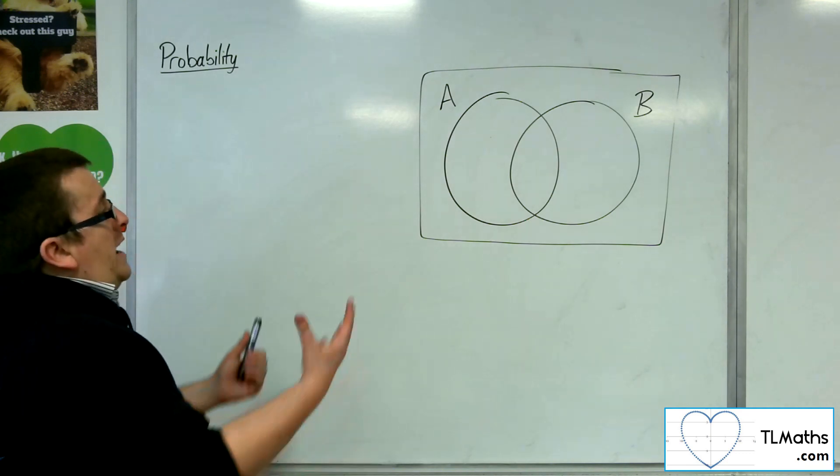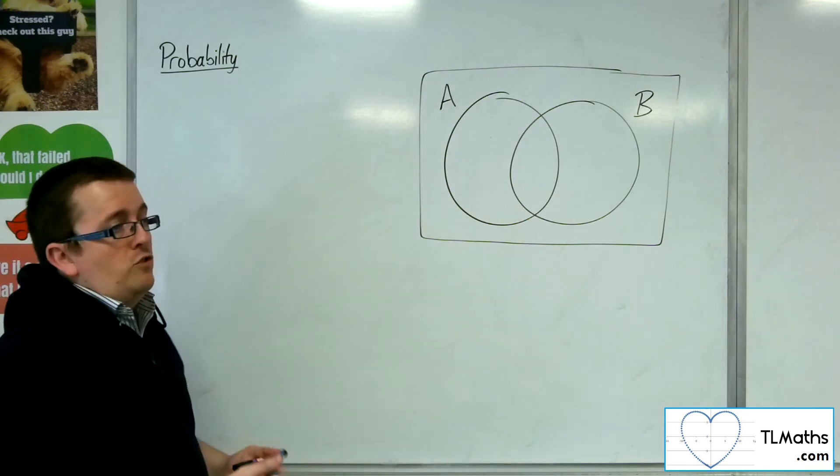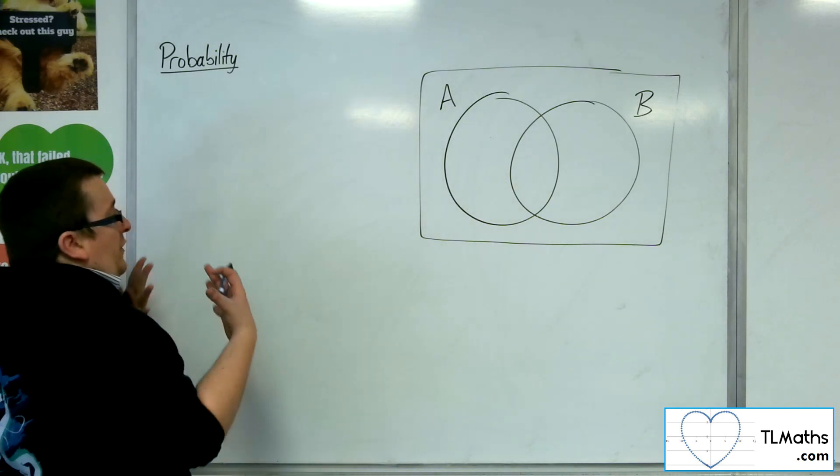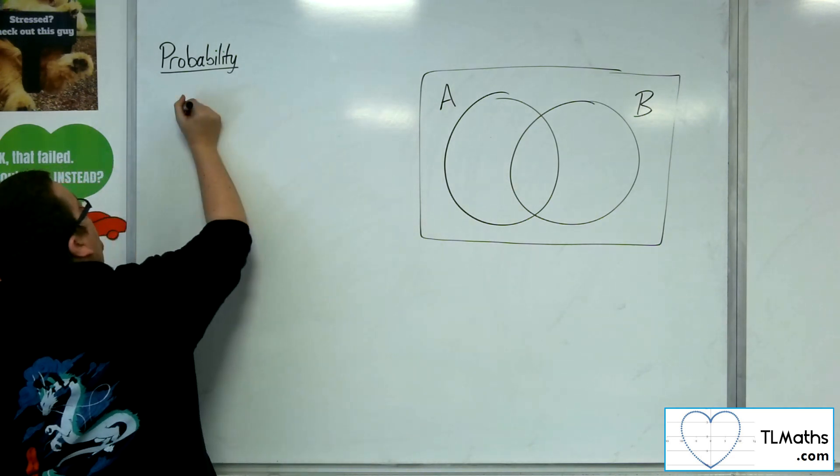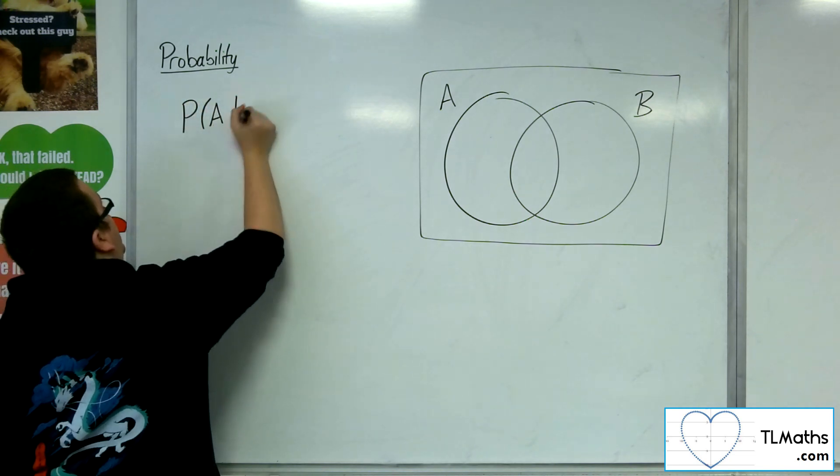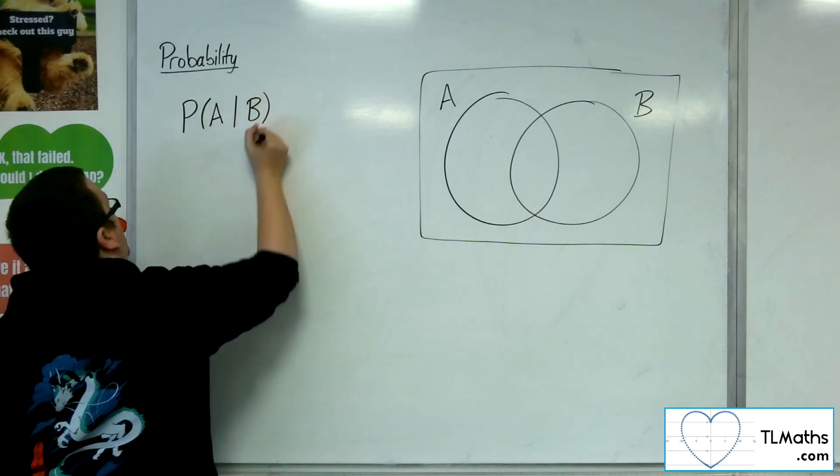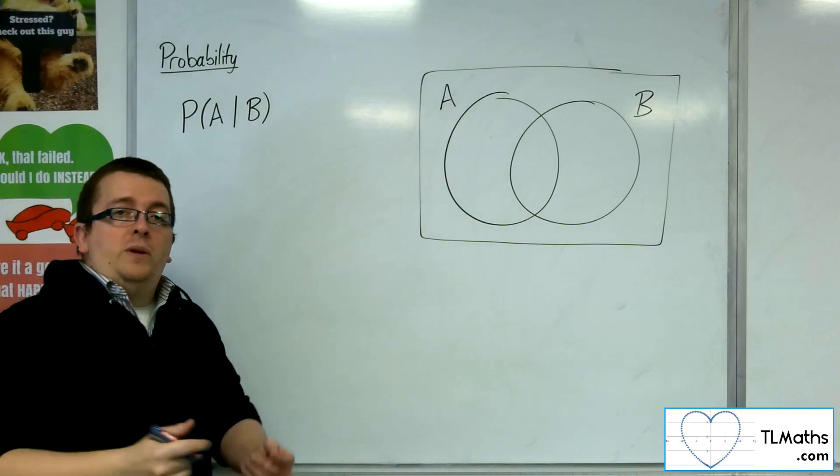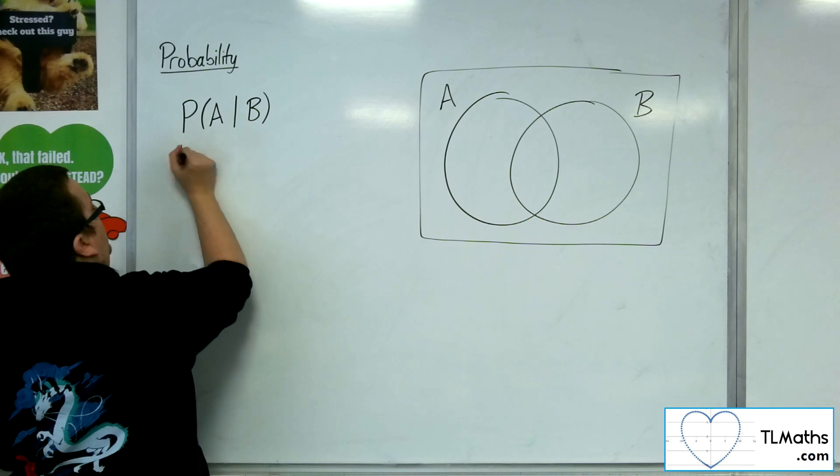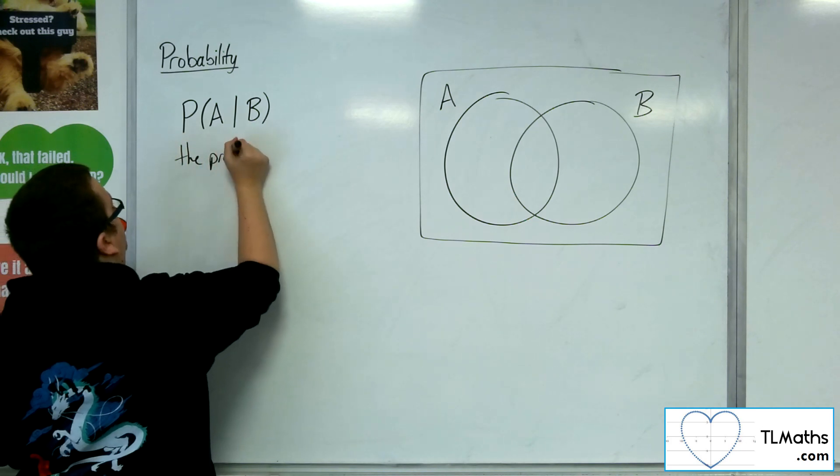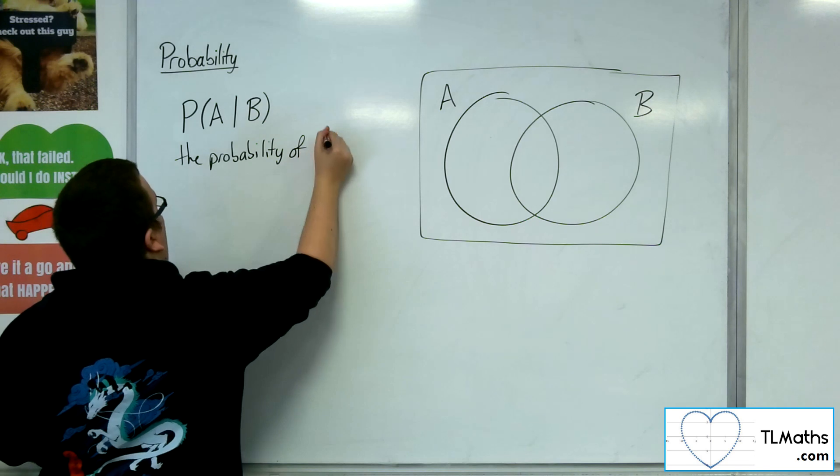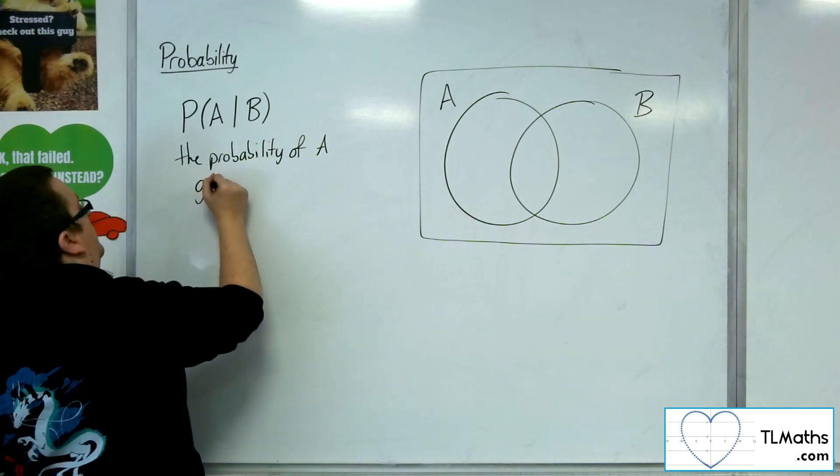So here is a Venn diagram. It's got a Venn diagram, two events, and there's an intersection. Now, what we do is we say that we want to find the probability of A given that B has occurred. So we use this vertical line to separate the A and the B, and this reads as the probability of A given B.